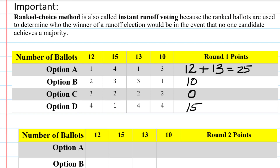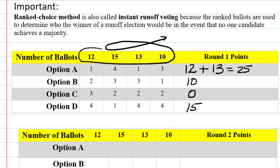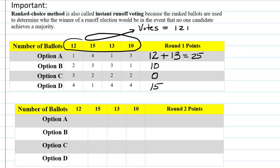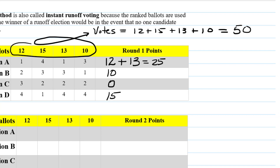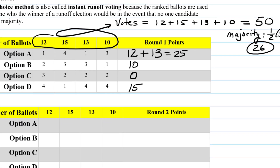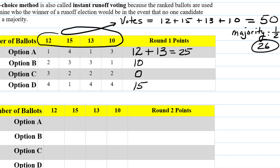If one of the candidates has a majority of the points, then we're done. The number of ballots is the number of votes, so the total number of votes is 12 plus 15 plus 13 plus 10, which is 50 votes. A majority would be half of 50 plus one — half of 50 is 25, but we need to be higher than that, so 26 would be a majority. None of our options have 26 votes. A came very close with 25, but it doesn't have 26. So we eliminate the candidate with the fewest votes, which is option C with no first place votes. Option C is out of the running.